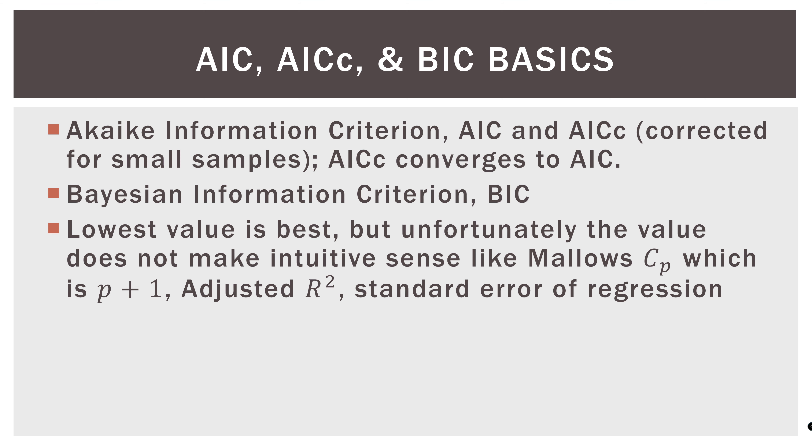Now, if you want to get the gist of this video, this is it. The lowest value for the AIC and the BIC, the lowest value is the best. But unfortunately, that value doesn't make really intuitive sense, like Mallows CP, which is just P plus one. So P in that case, remember, is the number of variables in our model. That's our target for Mallows. So if we have three variables, the target we're looking at is four. And that makes intuitive sense. Also things like the adjusted R square makes intuitive sense. That is the proportion of variation explained by the model. And then standard error of the regression is also intuitive.